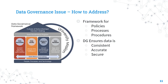Data governance also includes data security — the protection of data from unauthorized access, use, and disclosure. It is essential to establish clear data security policies and procedures to ensure that data is protected from security breaches, data theft, and data hacking. All these problems can occur if data security measures are not implemented as part of data governance. In short, there are three major components of data governance: data ownership, data access, and data security.